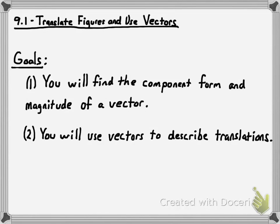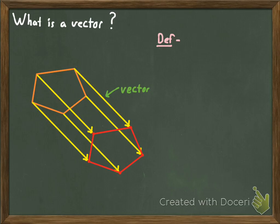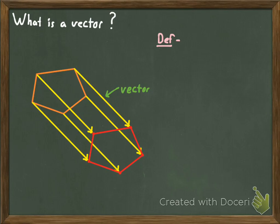Let's get into what a vector is first. I want to use a picture from the previous video. What I showed you there is that whenever you're translating a figure and you move every vertex the exact same distance and direction, those little ray-looking things are called vectors. Now I'm going to write down the definition for a vector and describe it a little bit further. By definition, a vector is a quantity that has both direction and magnitude, or size.